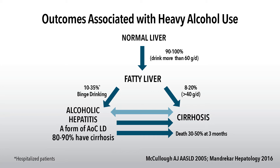Moving from a normal liver, drinking more than 60 grams a day will move a patient relatively quickly to fatty liver. With binge drinking, alcoholic hepatitis is more likely, whereas chronic low-level alcoholic exposure is more likely to lead to cirrhosis. Patients might also be binge drinking on top of background alcohol consumption, producing this acute-on-chronic liver disease, especially in cirrhotic patients.